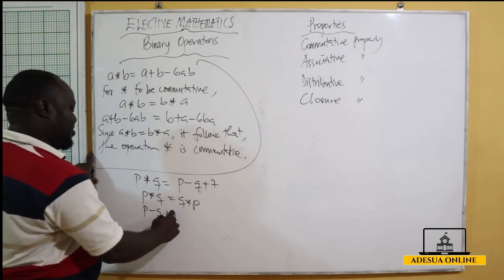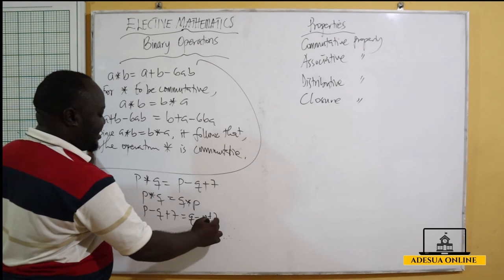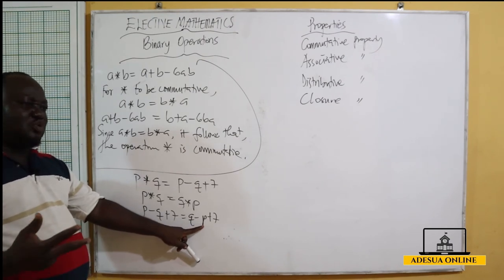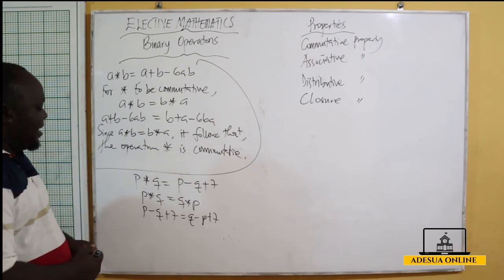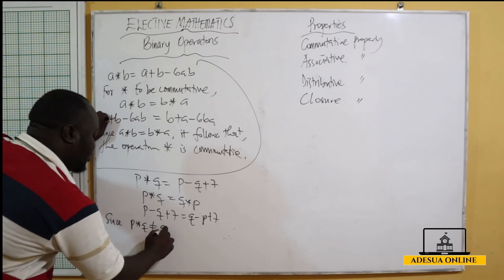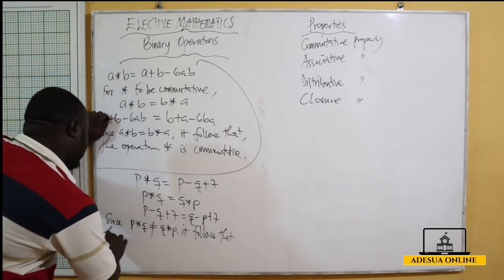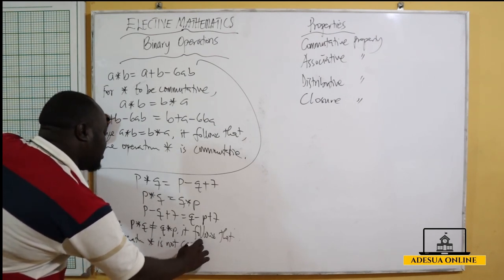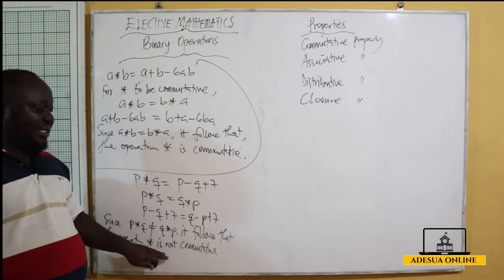For this to be commutative, p★q should equal q★p. We have p★q = p − q + 7. For q★p, p becomes q and q becomes p, giving q − p + 7. Comparing: p★q has positive p while q★p has negative p — they are not the same. Since p★q is not equal to q★p, it follows that the operation star is not commutative.